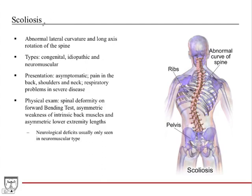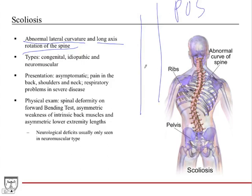Scoliosis is abnormal lateral curvature and long-axis rotation. Looking at the spine from posteriorly, it can deviate laterally as shown in the diagram, and can also cause the spine to rotate either way. Scoliosis is much more complicated than just a lateral deviation — there's often significant torsion on the spine combined with that lateral curvature.